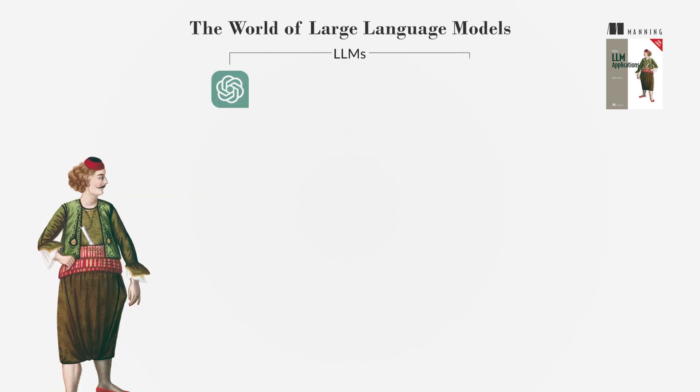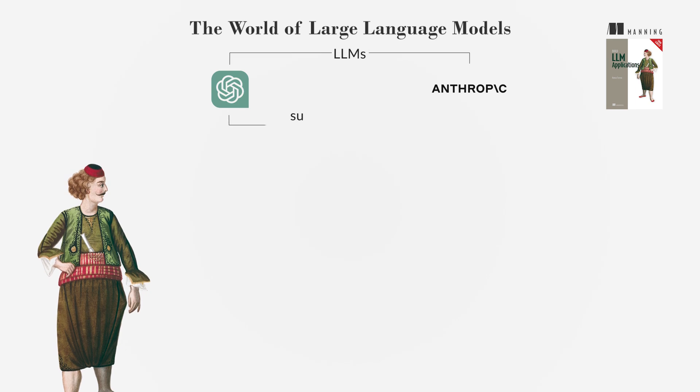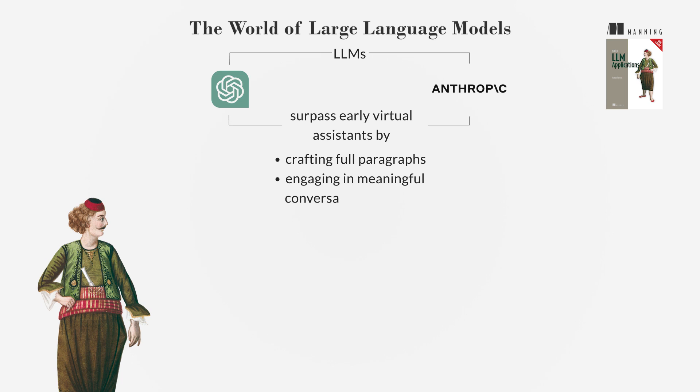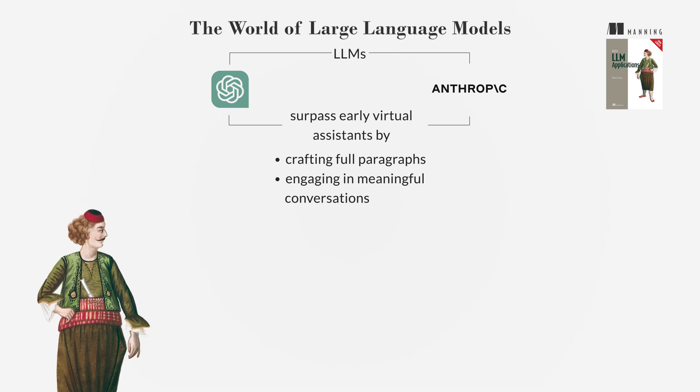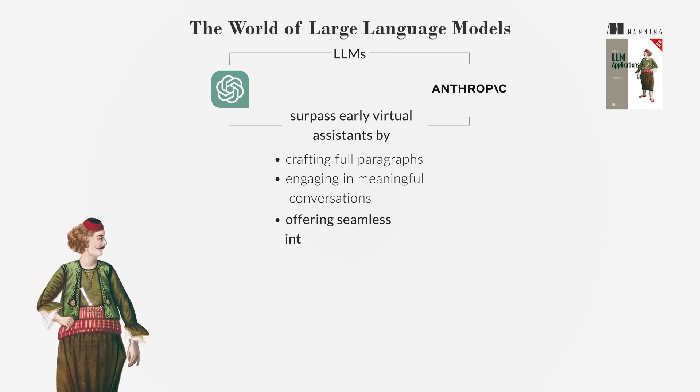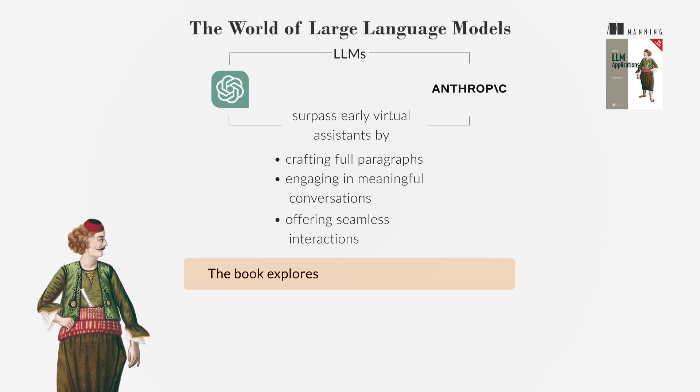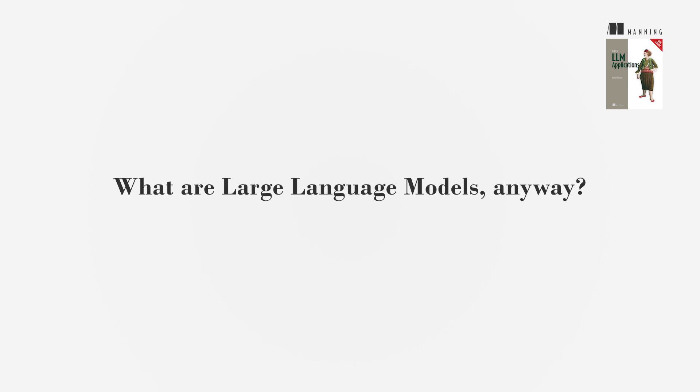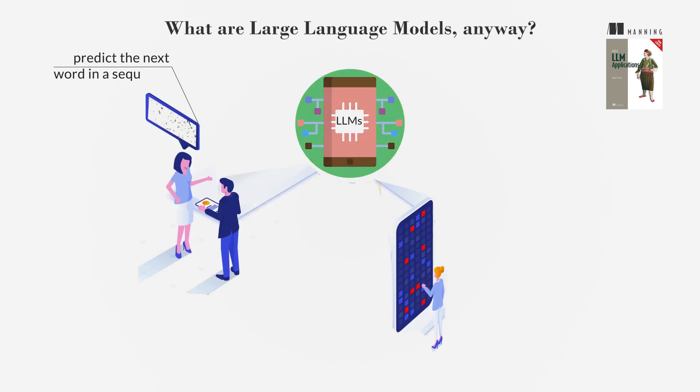LLMs like ChatGPT and Anthropic surpass early virtual assistants by crafting full paragraphs and engaging in meaningful conversations. They anticipate conversational turns, offering seamless interactions. The book explores LLMs' practical applications, highlighting their versatility across domains like customer service and scientific research. LLMs predict the next word in a sequence, similar to human conversation anticipation.